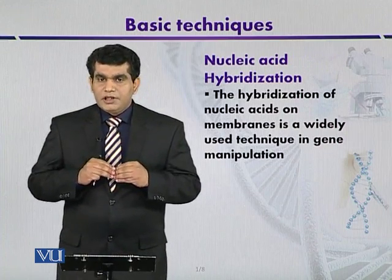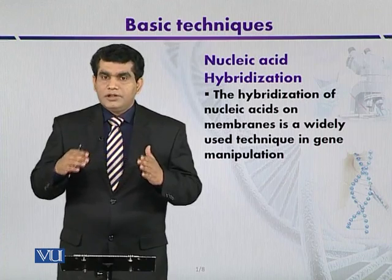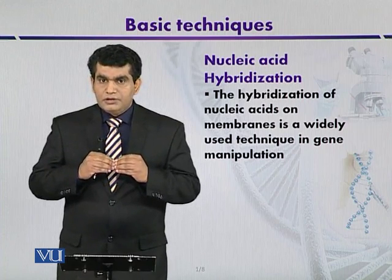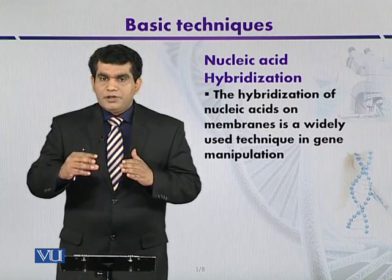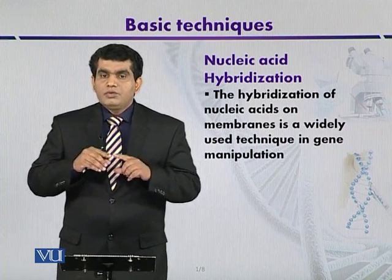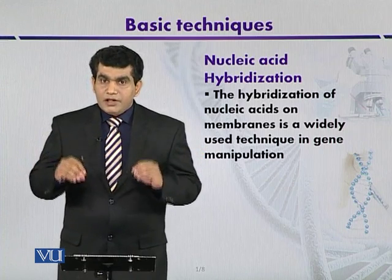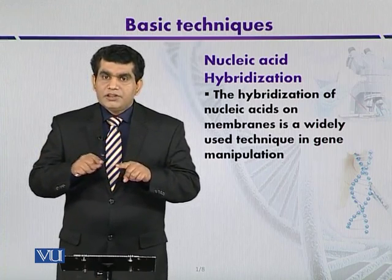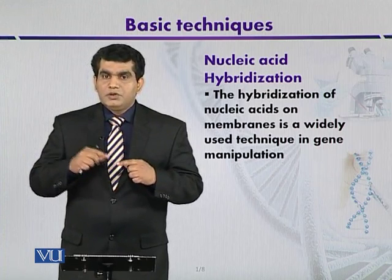After immobilization of the DNA on a solid support like a nitrocellulose membrane or nylon membrane, such nucleic acids can be used for hybridization experiments. You can say that you have DNA-like fragments immobilized from cells whose sequence is known — it is your gene of interest and it is well characterized. Well characterized means you have an idea of how many base pairs are there and what the sequence of those base pairs is. To detect this sequence, you have a probe.